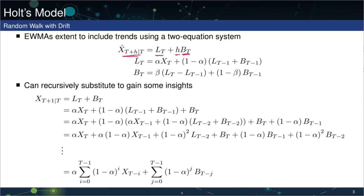If you look at each of the two equations in Holt's model, we see the level equation looks very similar to what we saw in SES. In particular, the level depends on the most recent value multiplied by alpha, the smoothing parameter, plus 1 minus alpha times the previous level and trend.